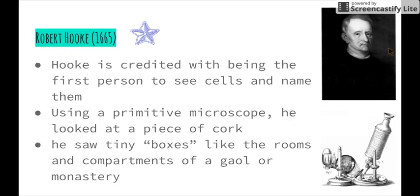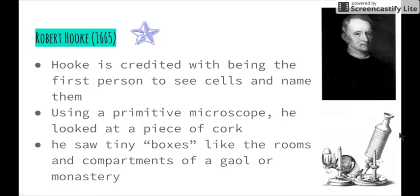Using a primitive microscope — a sketch of the microscope that he used is shown here — he looked at pieces of cork, which we know is the bark of trees. What he saw was tiny little boxes, and he thought they looked very similar to the rooms that monks lived in in monasteries, or the same as compartments of a jail. Both were referred to as cells, and that's how he gave the name 'cells' to what he saw.